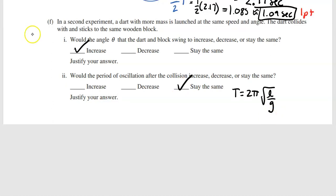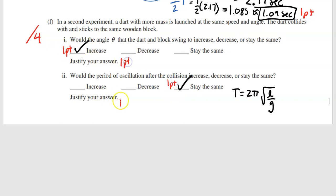Part F is worth four points total: one point each for checking the correct box for each sub-question, and one point each for correct justification for each.